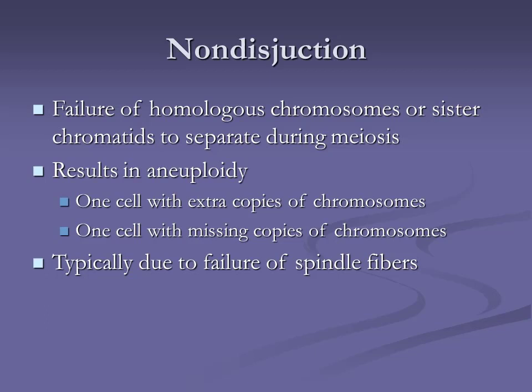Polyploidy means too many — poly means many. You can also imagine there's going to be a daughter cell that gets shortchanged, missing a chromosome. When you put 'a' or 'an' in front of a word it means not or without — like asymptomatic means no symptoms. So aneuploidy means missing a chromosome or set of chromosomes. Typically, when you have these chromosomal anomalies, many are incompatible with life. Only a few lead to actual births, such as Down syndrome, and those individuals are highly disadvantaged.